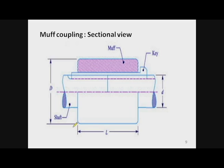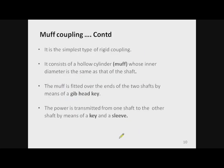This is the sectional view of muff coupling — you can see the upper half in section with various dimensions shown: small d is the diameter of the shaft, capital D is the outside diameter of the muff, and L is the length of the muff.